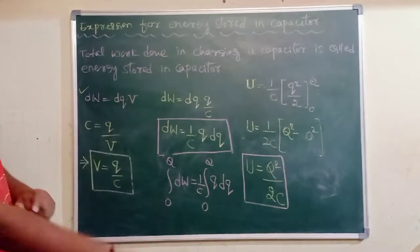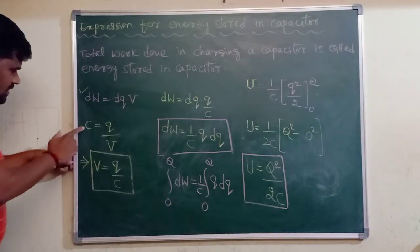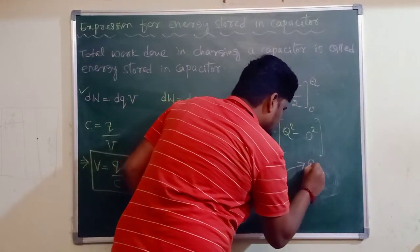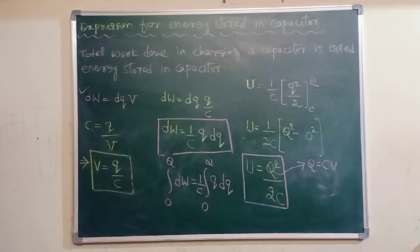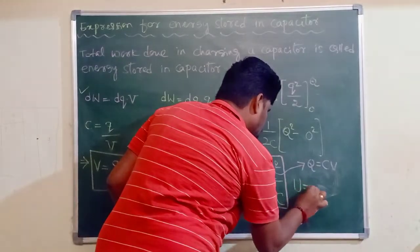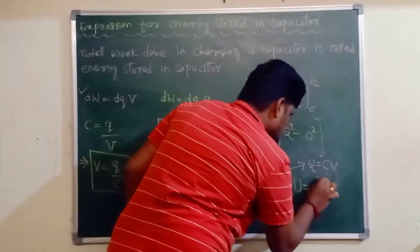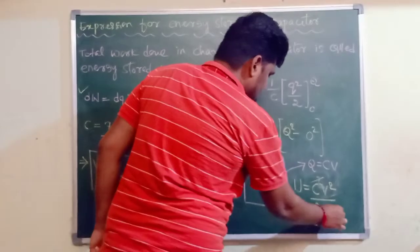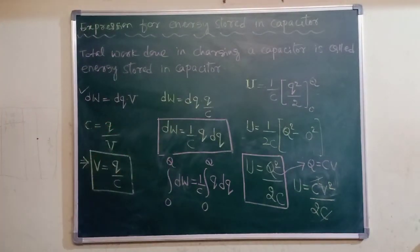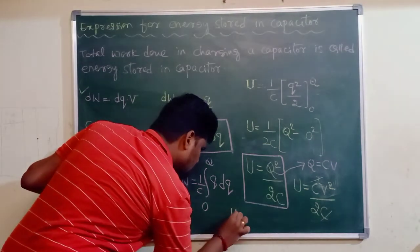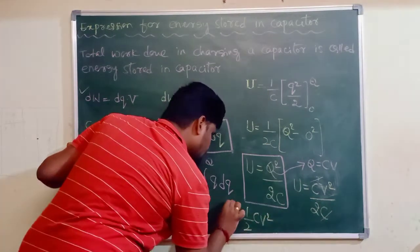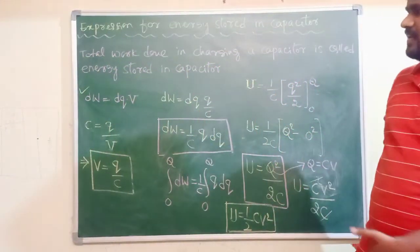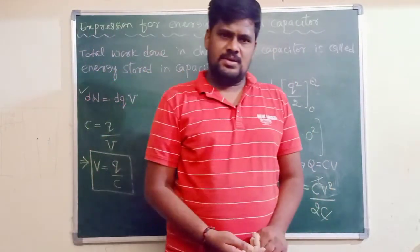So, U = ½CV² is the final expression for energy stored in a capacitor. This is one of the very important derivations as far as the examination is concerned.